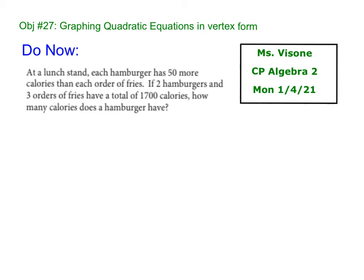So this is another SAT question. At a lunch stand, each hamburger has 50 more calories than the fries. If two hamburgers and three orders of fries have a total of 1,700 calories, how many calories does a hamburger have? So now you could totally do guess and check if you want. It's up to you. I did this using a system of equations. But if you want to sit there and try guess and check, go for it.